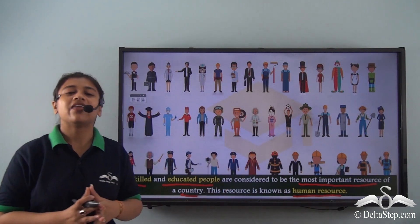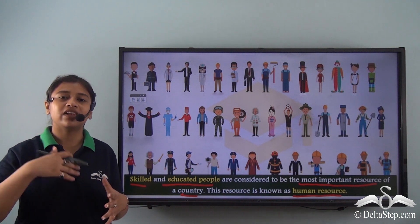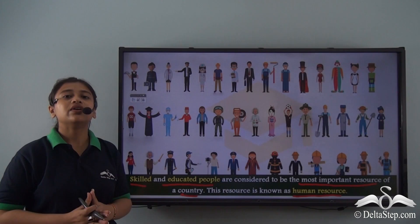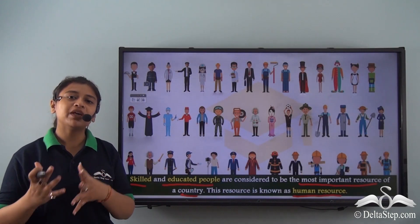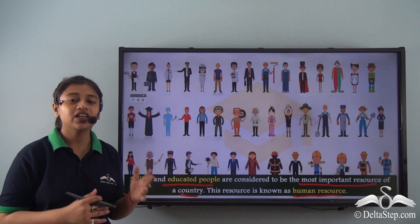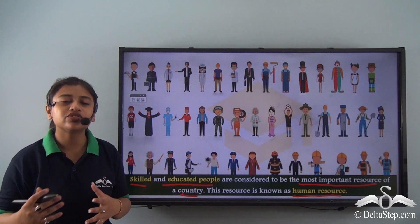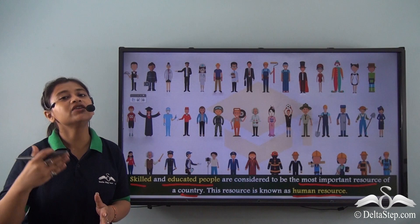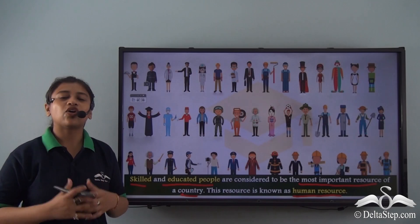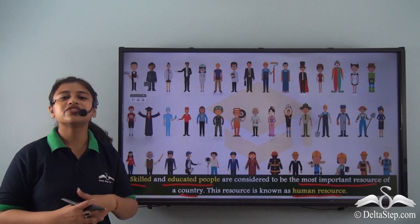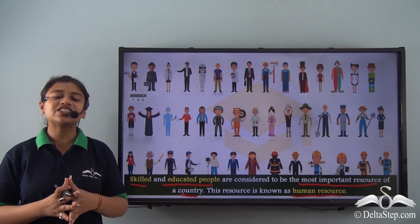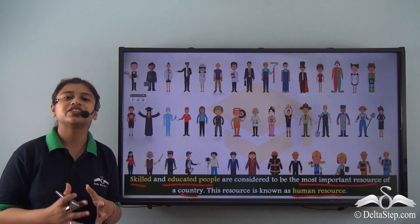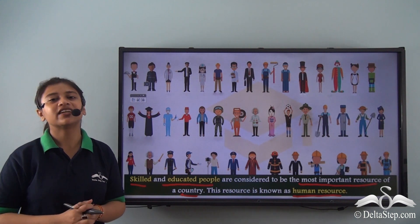Humans who can contribute to the development of the country are known as human resource. It means that people in any particular country who can equally contribute to the overall development of the country are called the human resource of that country. The contribution of this human resource can lead to the upliftment of the country — it can turn a developing country into a developed country very soon.